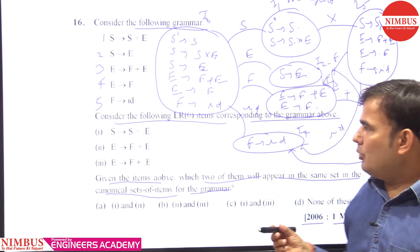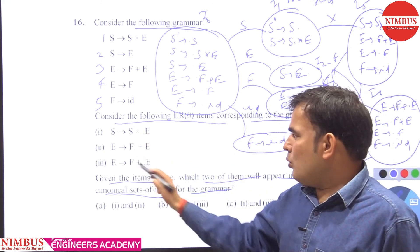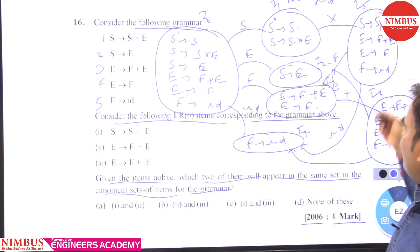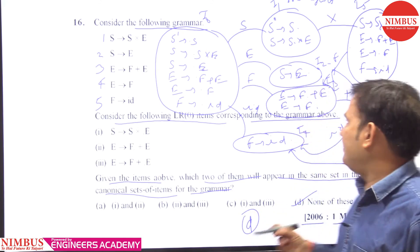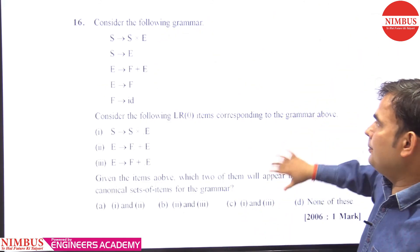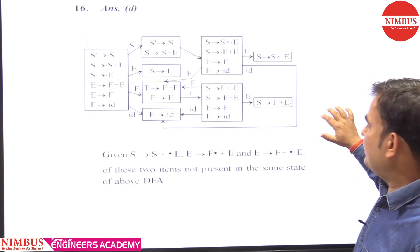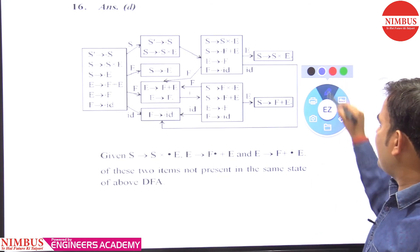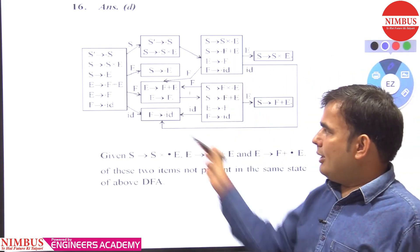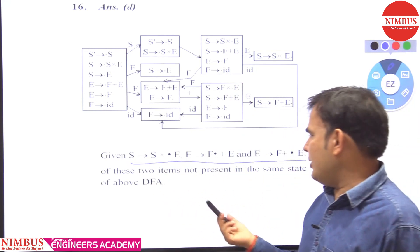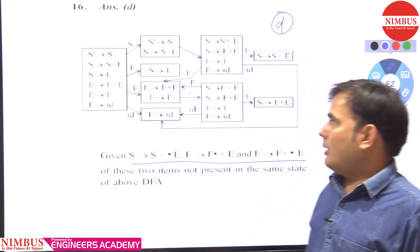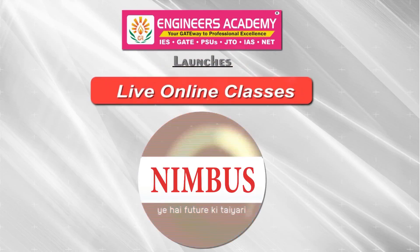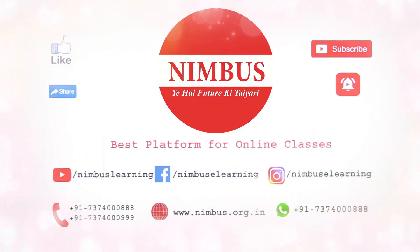Looking at the complete canonical set of items, none of the two given LR0 items appear in the same state. So option D is correct — none of them are present in the same states. Thank you. If you liked the video, please hit the like button, share the video, subscribe to our YouTube channel and press the bell icon for the latest updates.